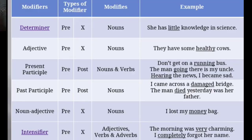An adjective can only modify a noun. For example: 'They have some healthy cows.' The word 'healthy' modifies the word 'cows,' and that is why 'healthy' is a pre-modifier. There are lots of adjectives we use in everyday life: good, bad, small, big, beautiful, ugly, and many more.